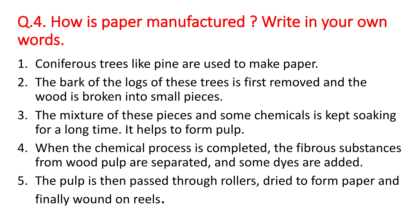Question number 4: how is paper manufactured? Write in your own words. First, coniferous trees like pine are used to make paper — coniferous trees are trees that are cone-shaped. The wood of such trees is used to make paper. Second, the bark of the logs of these trees is first removed and the wood is broken into small pieces.